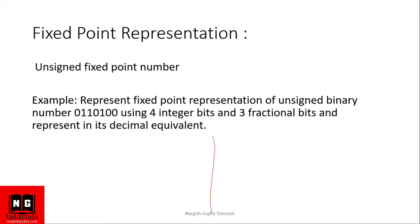Let's start with the fixed point number representation, then we will see the conversion. As given in the question, we have to take four integer bits — four bits before the decimal — and after the decimal we will have three bits. According to our question, this will be the fixed point number representation.